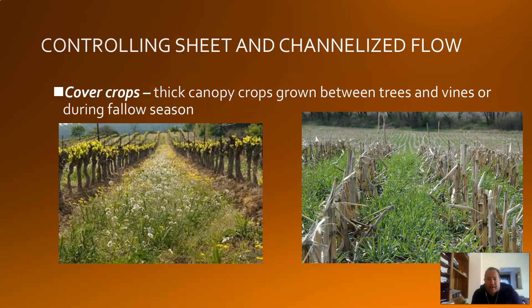We addressed a few slides ago that the number one cause of problematic water erosion is inadequate cover crops. We definitely want to make sure we have cover crops growing — thick canopy crops grown between trees and vines during the fallow season. Not just the crop we're growing for our economic base, but also putting some sort of cover crop, whether it's grass, wheat, or alternating crops. Just having some sort of cover on the soil so it's not bare and exposed to water or wind erosion.